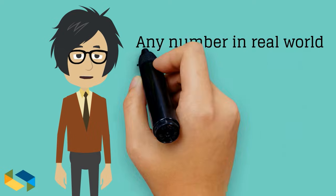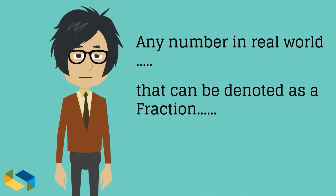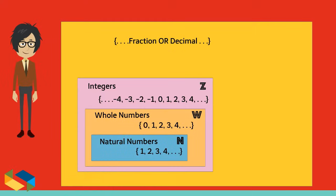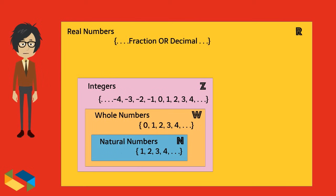So any and every number that you can practically think of in the real world, which can be denoted as a fraction or in a decimal form, constitute what is called real numbers, expressed as the symbol R.